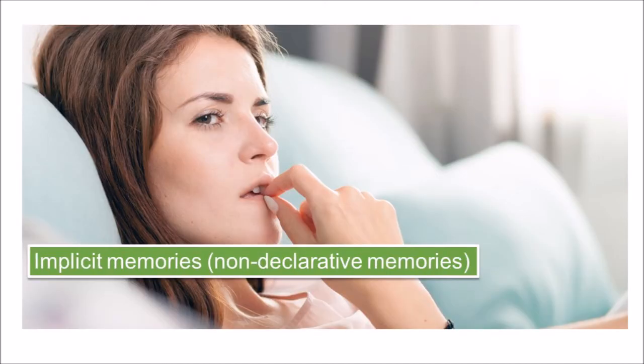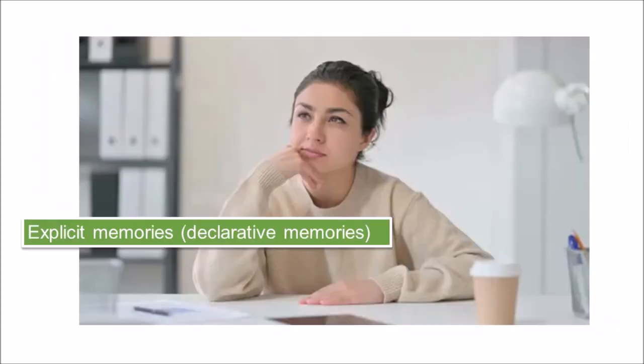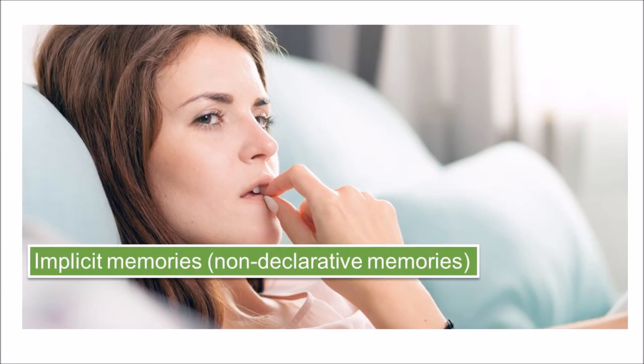Implicit memories, also called non-declarative memories, are memories that are not part of our consciousness. They are memories formed from behaviors. There are two components of long-term memory: explicit and implicit. Explicit memory includes episodic and semantic memory. Implicit memory includes procedural memory and things learned through conditioning.